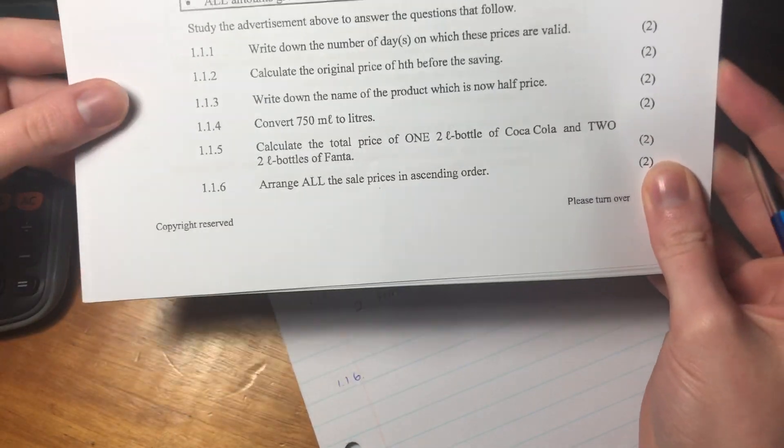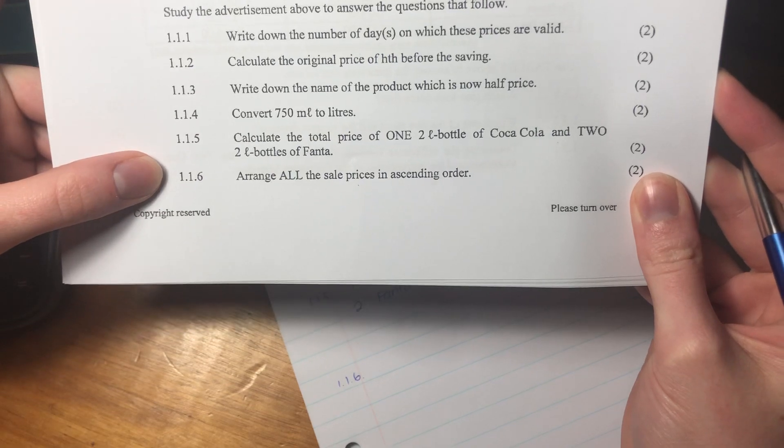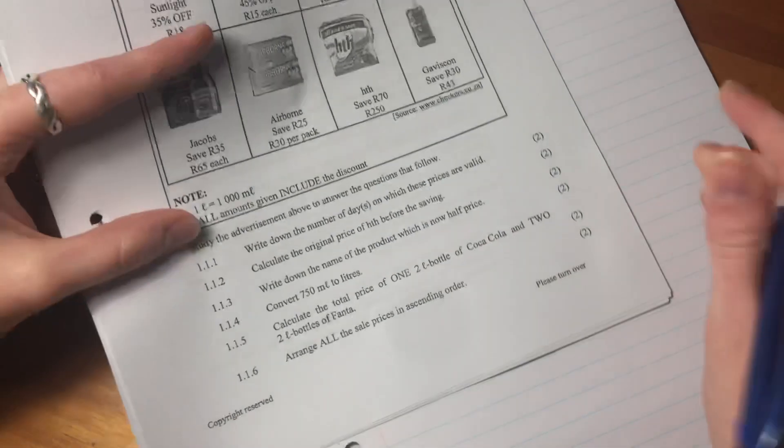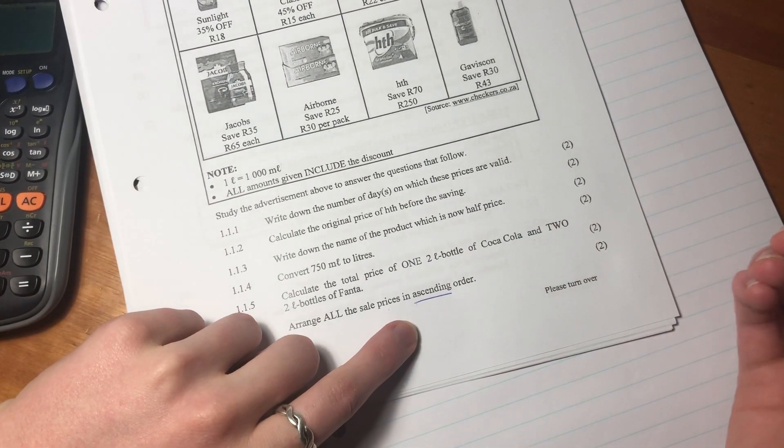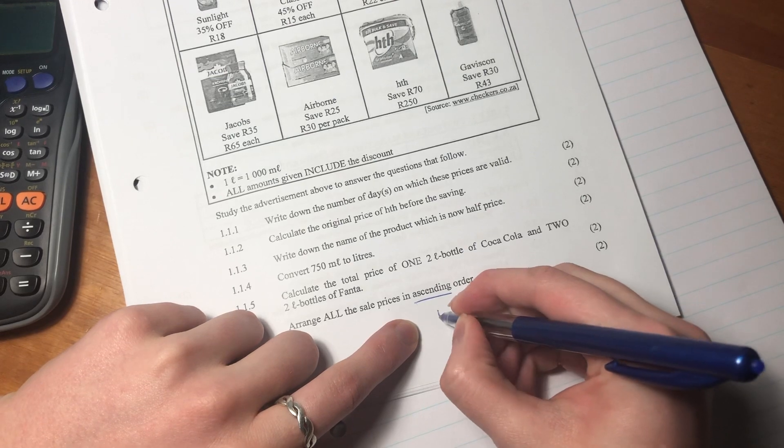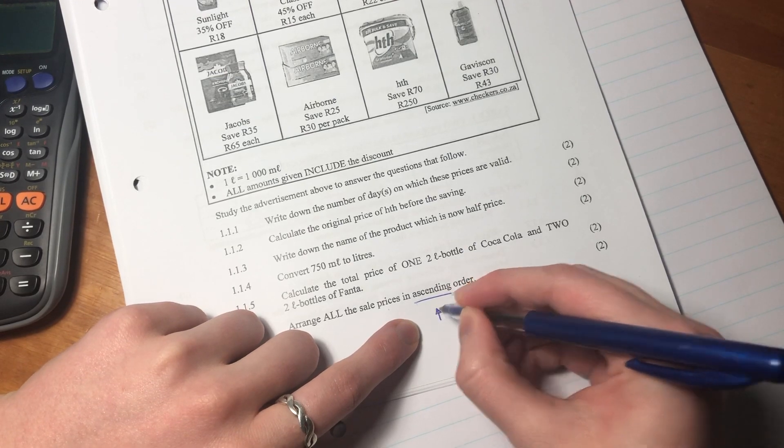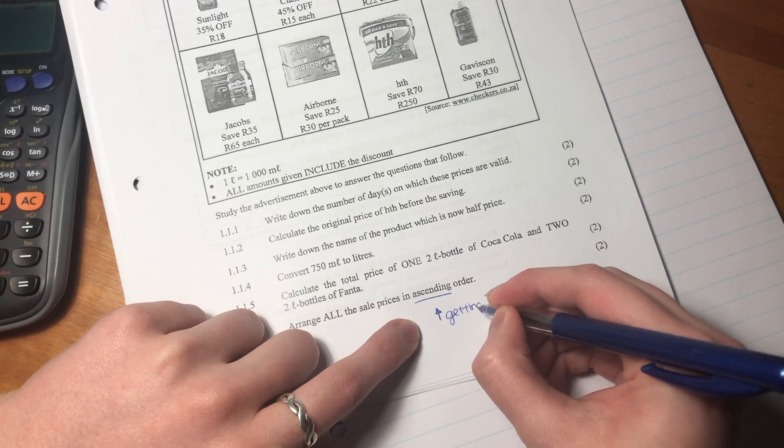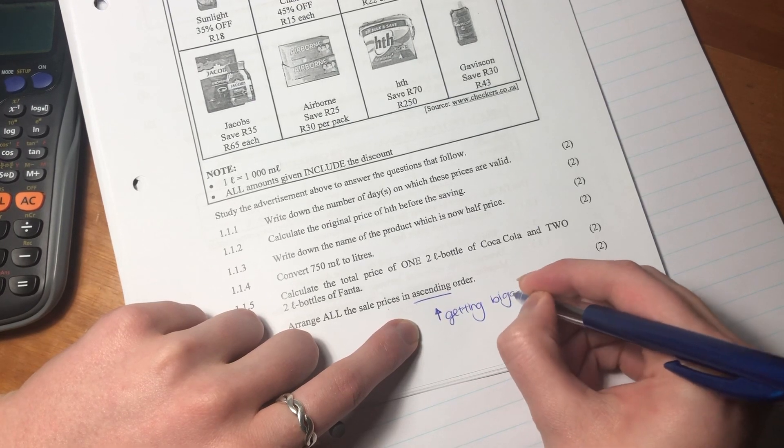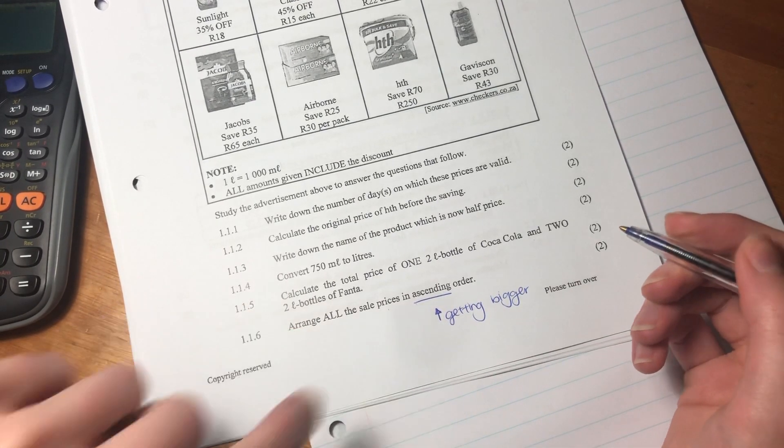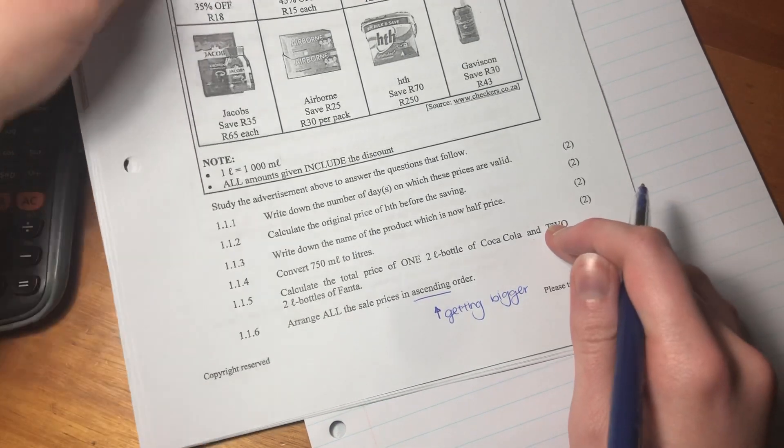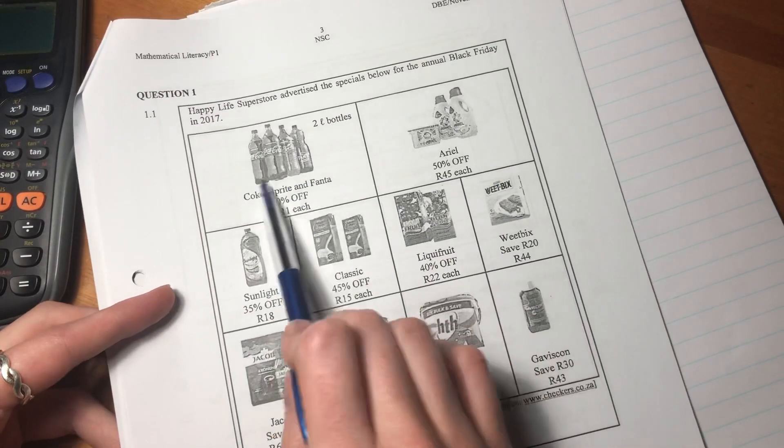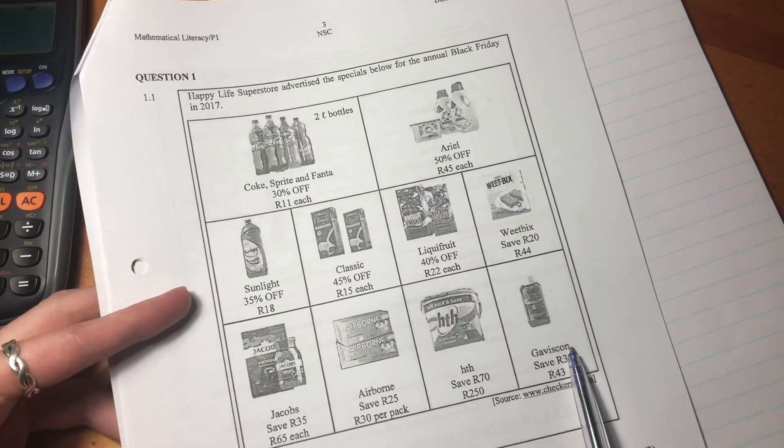Arrange all the sale prices in ascending order. What they're testing here is that you understand what ascending means. Ascending means getting bigger. So we want to organize it from the smallest number that we have to the biggest number. There's 10 different prices we need to put in. Let's look for the smallest one. The smallest one I think may be 11 rand.